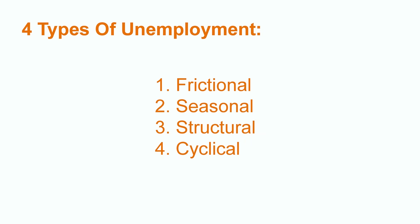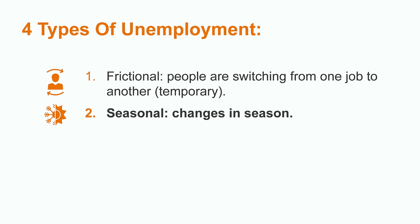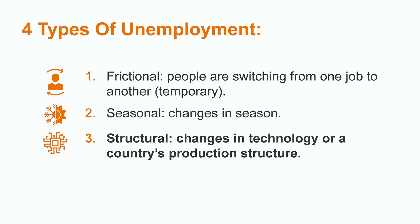There are different types or causes of unemployment: frictional, structural, seasonal, and cyclical. Frictional unemployment occurs when people are switching from one job to another; this type is supposed to be only temporary. Seasonal unemployment is associated, as its name says, with changes in season which lead to people running out of jobs, such as ski resort workers or ice cream vendors. Structural unemployment is a little bit more difficult to deal with since it has to do with changes in technology or a country's production structure. For example, if all supermarkets turn into smart stores without cashiers, then cashiers would be structurally unemployed due to a technological innovation.